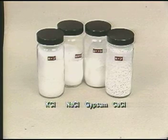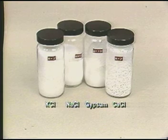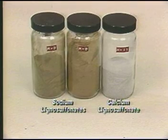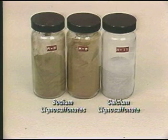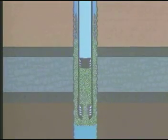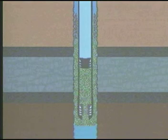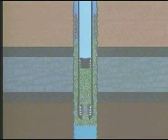Various chemical accelerators or retarders can be added to the slurry to speed up or slow down the setting time. Increasing temperatures reduce the time necessary for cement to set, so deep wells can become difficult as required pumping time increases while thickening time decreases. Retarders will usually be required to prevent premature setting of cement inside the casing.